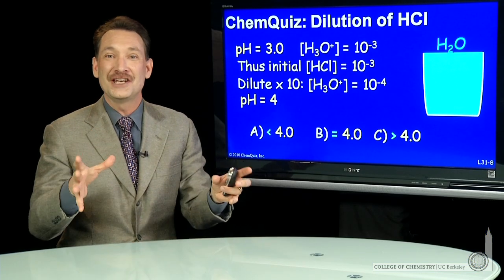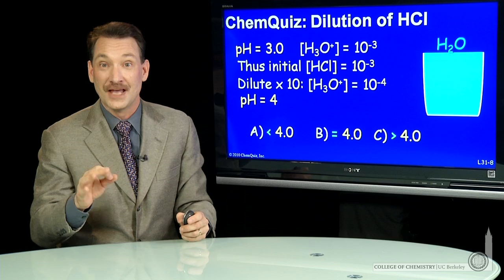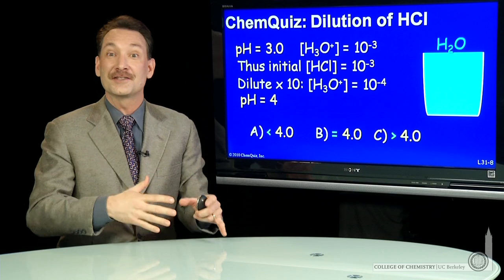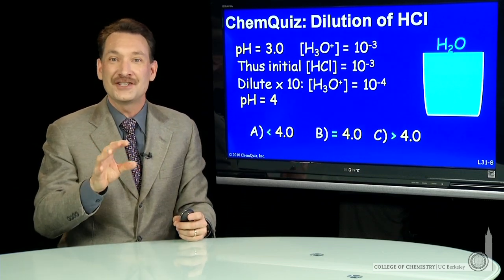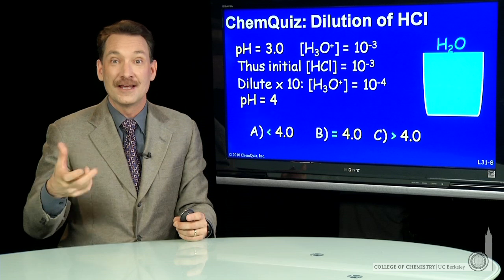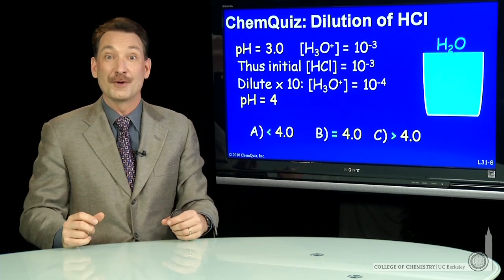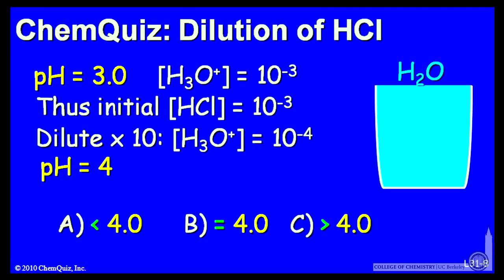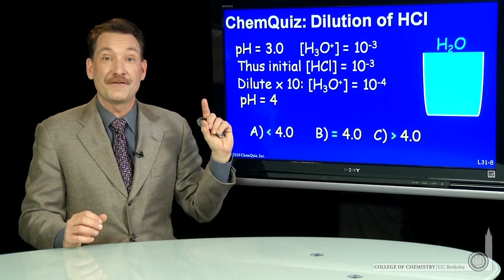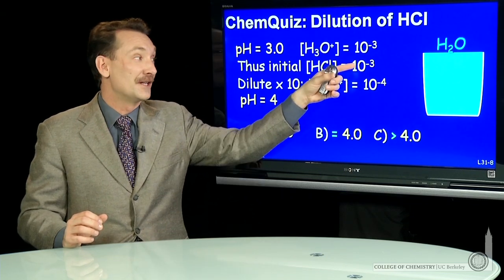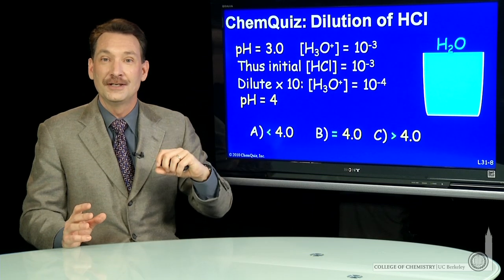We're talking about taking HCl, a strong acid, at pH 3, and diluting it by a factor of 10. Strong acids are particularly easy to work with and make calculations for, because they completely dissociate. So HCl at pH 3 means the H₃O⁺ concentration is 10⁻³, and we originally had 10⁻³ molar HCl that completely dissociated to form 10⁻³ molar H₃O⁺. Now you add water and dilute by a factor of 10 — the H₃O⁺ concentration goes from 10⁻³ to 10⁻⁴. A simple 10-fold dilution.